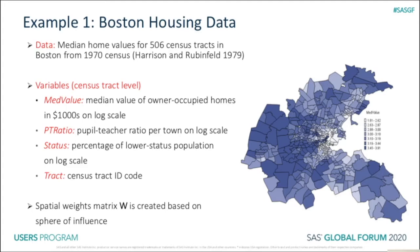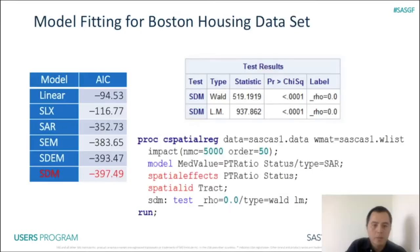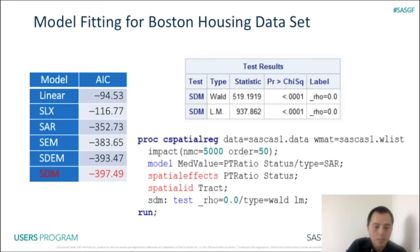For this analysis, we consider a spatial weights matrix W created based on a spatial sphere of influence. You can fit various spatial econometric models to the Boston housing data using PROC SPATIALREG. For the purpose of demonstration, we only consider six models and provide their AIC values. These six models, ranked by their AIC values, are: Linear Regression Model, Spatial Lag of X Model, Spatial Autoregressive Model, Spatial Error Model, Spatial Durbin Error Model, and Spatial Durbin Model. If AIC is used for model selection, the Spatial Durbin Model, or SDM, is the winning model because its AIC value is the smallest.